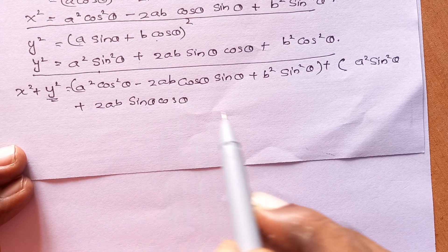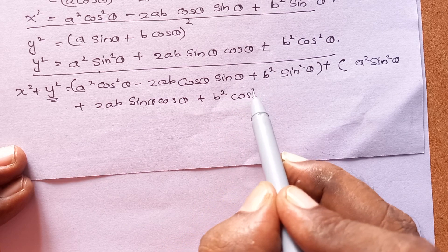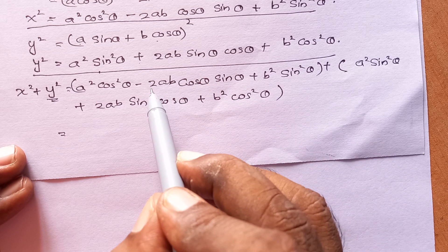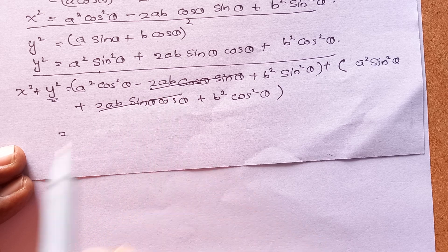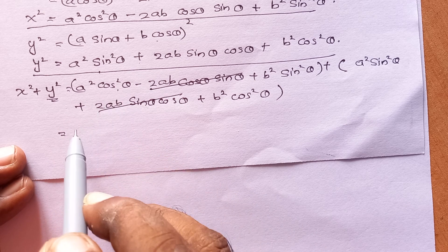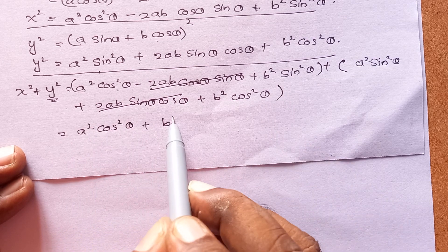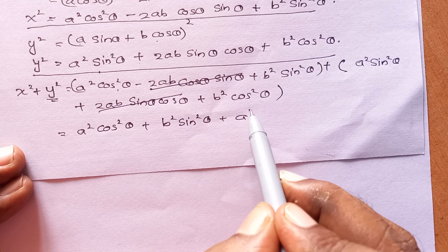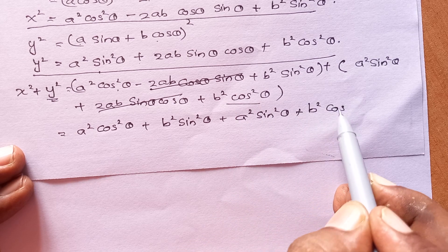So we have x square plus y square. Looking at the combined expression, you can find that minus 2ab cos theta sin theta plus 2ab sin theta cos theta will be cancelled. What remains is: a square cos square theta plus b square sin square theta plus a square sin square theta plus b square cos square theta.